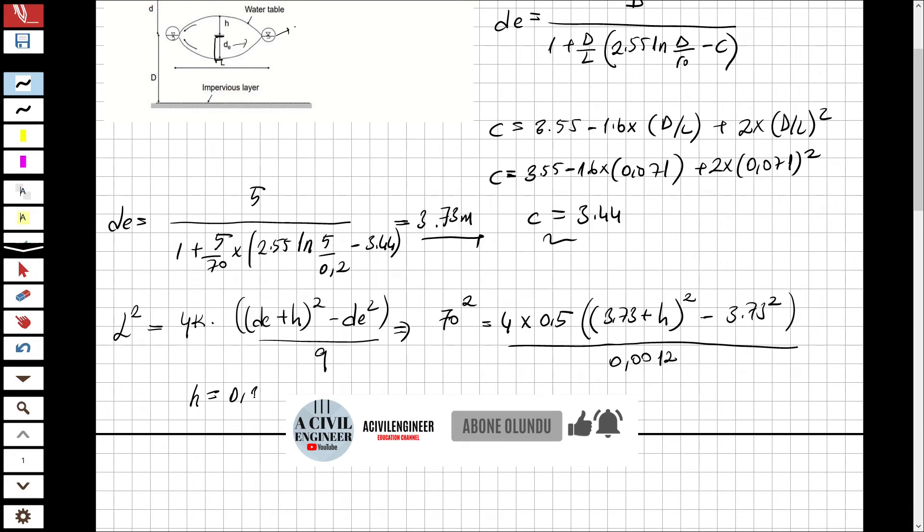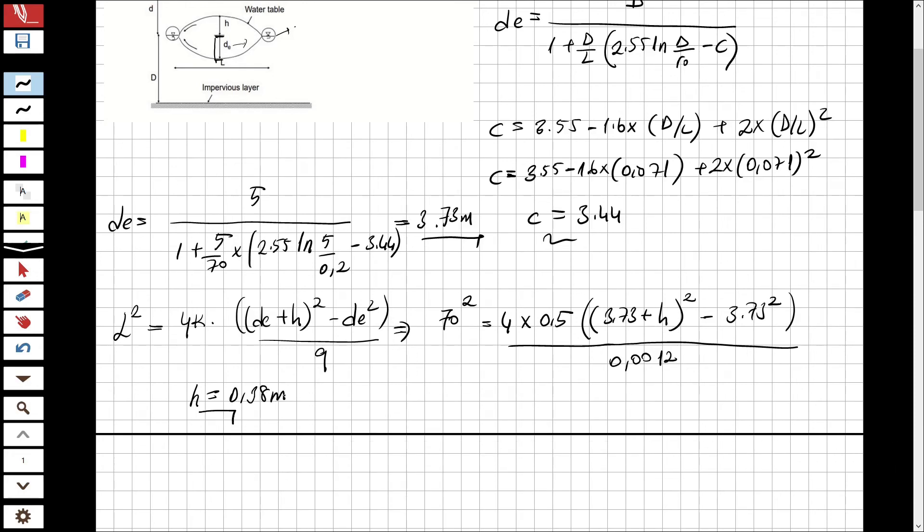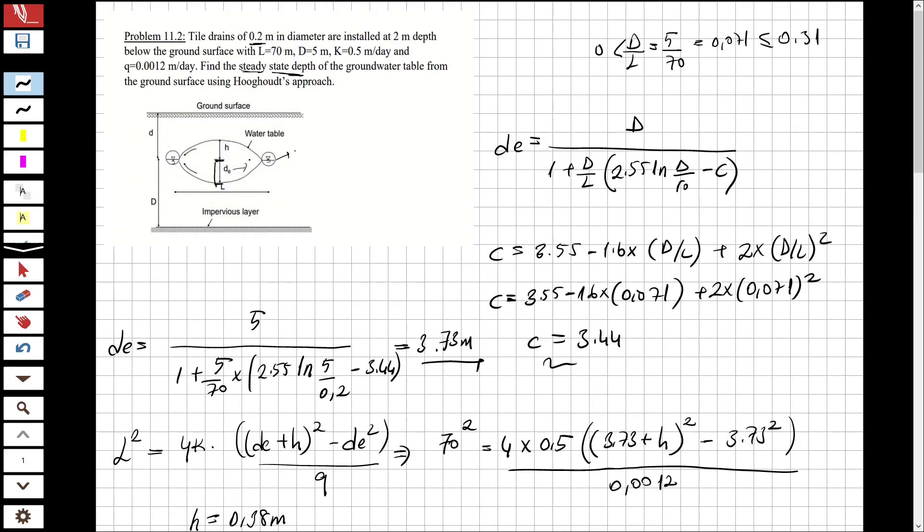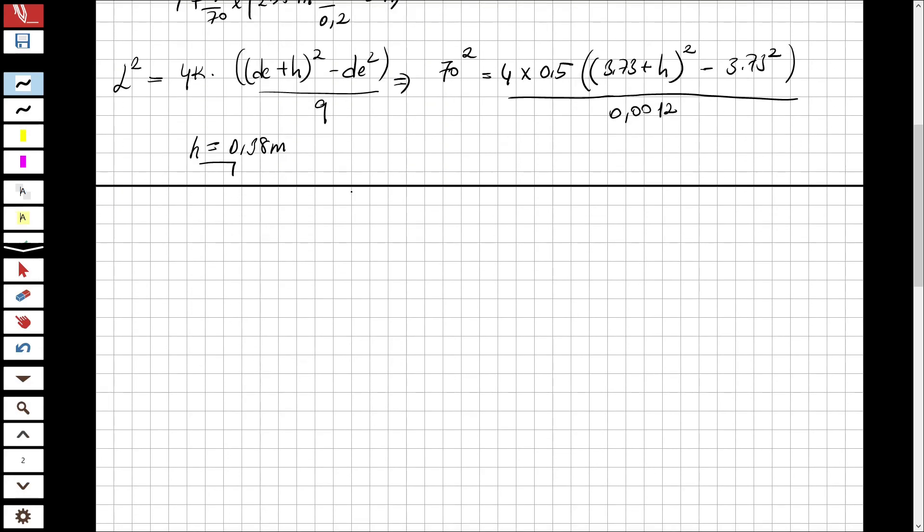This is h. So now I have h. I know the depth of drain is two meters. When I subtract 0.38 from two meters I'm going to obtain 1.62 meters as the steady state depth.